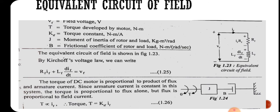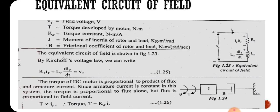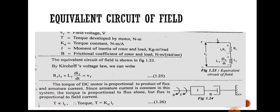The torque of the DC motor is proportional to the product of flux and armature current. Since armature current is constant, torque is directly proportional to flux alone. Since flux is proportional to field current, we can write T = KTF·If. This is the torque equation.